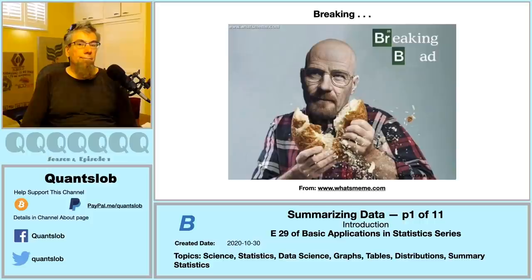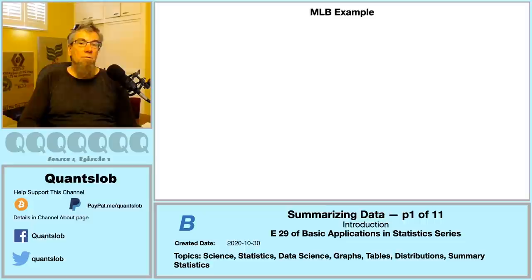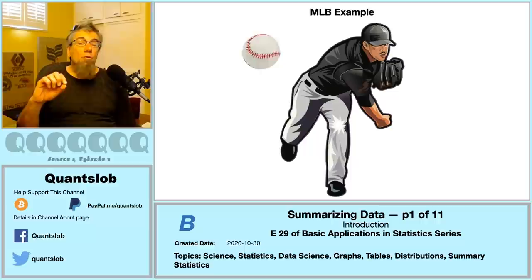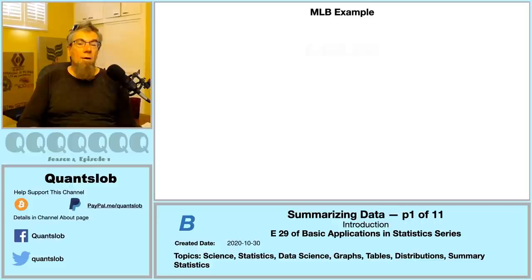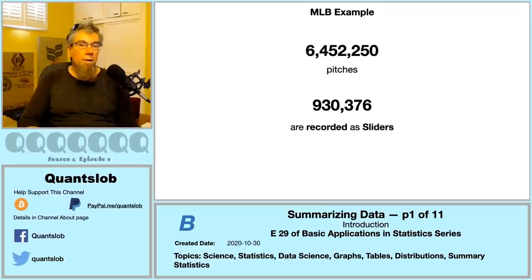Let's briefly explore a simple example. According to our dataset of major league baseball from 2012 to 2019 inclusively — including spring training, exhibition, and postseason — pitchers have thrown a total of six million four hundred fifty-two thousand two hundred and fifty pitches. Of these roughly six and a half million pitches, nine hundred thirty thousand three hundred seventy-six have been recorded as sliders — that's about fourteen point four two percent.